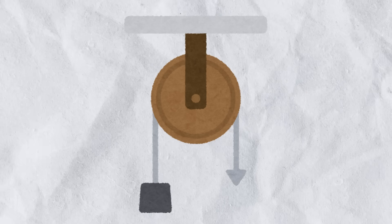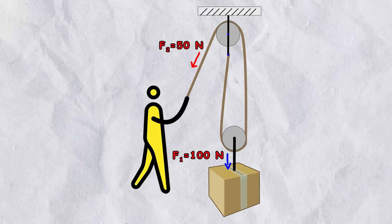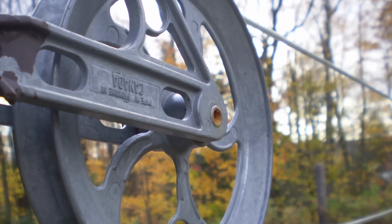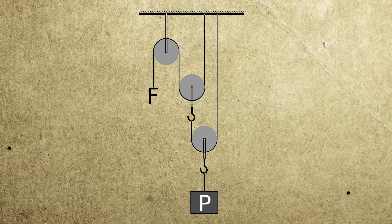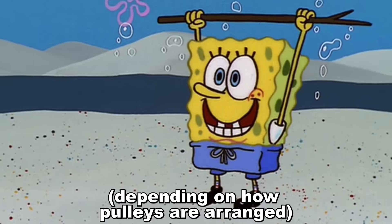Use one pulley and you redirect the force, but if you use two of them in a system, the required effort to lift the object gets divided by two, meaning you only need half the force to lift the same weight. And if you add a third pulley to the system, the required force drops to one third of the original.